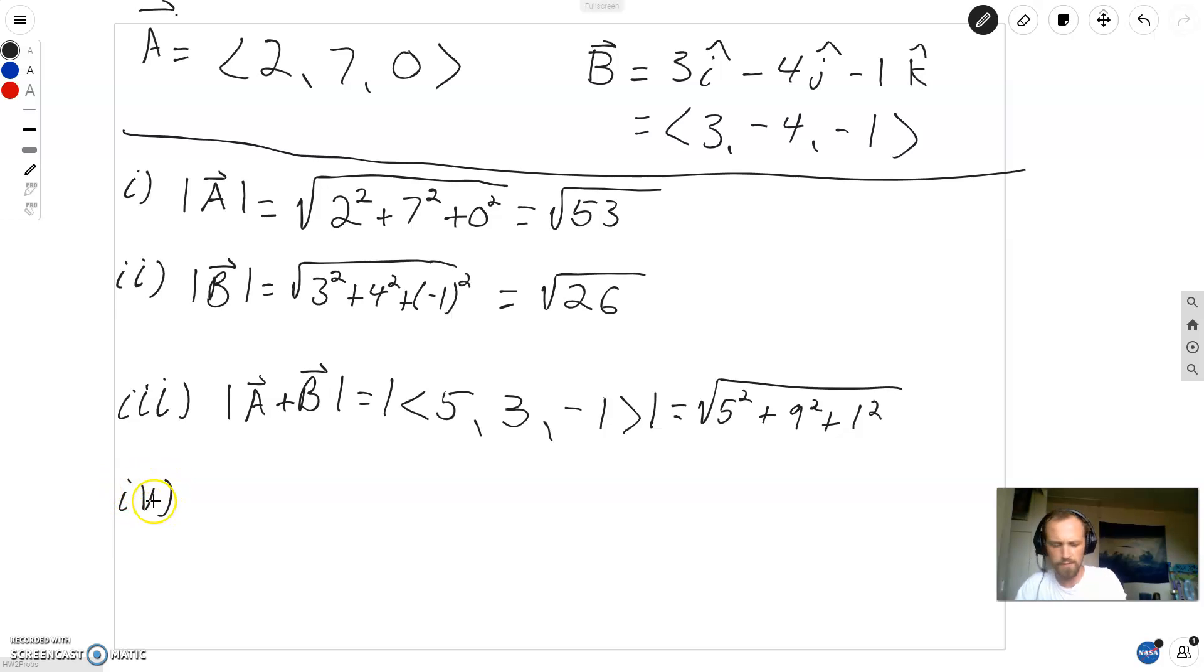And then part 4, we are doing A minus B. So we want the magnitude of A minus B, and that's going to be the magnitude of 2 minus 3 is negative 1. 7 minus negative 4 is 11, and 0 minus negative 1 is 1. So this is the square root of 1 squared plus 11 squared plus 1 squared.